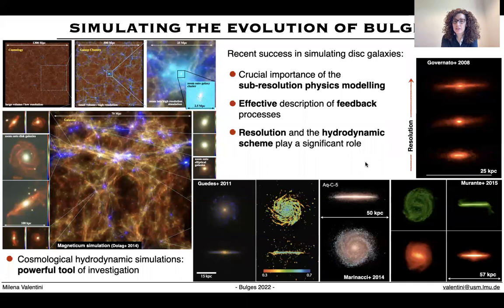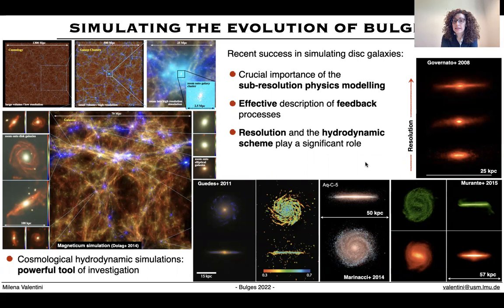Nowadays, cosmological simulations of spiral galaxies succeed at simulating systems which are dominated by the stellar disk and whose bulge-to-total mass ratios are in agreement with observations. However, this was not always the case, as early simulations suffered from spurious loss of energy and angular momentum by the gas component and therefore they usually produced bulge-dominated systems. Gaining accuracy in the description of the sub-resolution physics — all those physical processes occurring below the resolution limit — was crucial to overcome these limitations. A proper modeling of feedback processes was extremely important, and a key role was also played by the resolution of the simulations and by the hydrodynamical solver adopted.